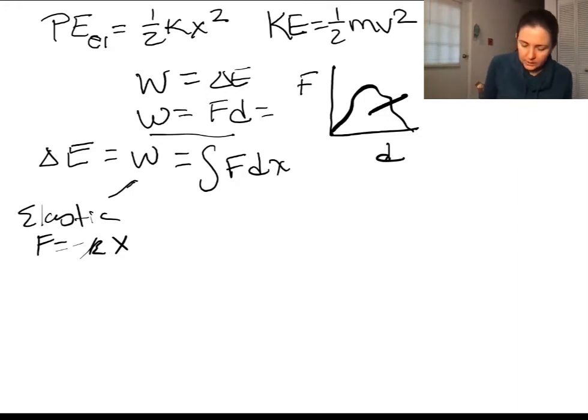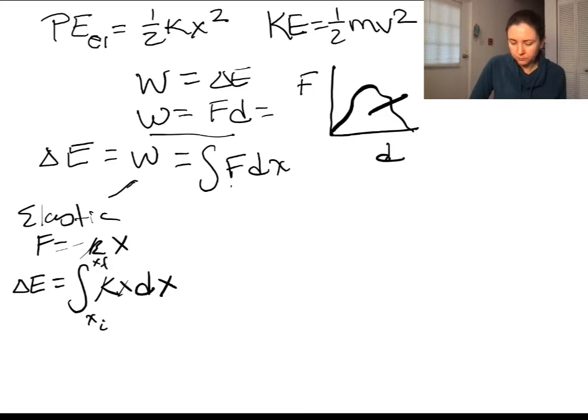I get the change in energy, or the elastic potential energy, is going to be the integral of f, which is kx over x dx, kx dx. This is from x initial to x final. This integral, we can pull the k out front, integrate x dx, and when we do that integration, we get 1/2 x squared.